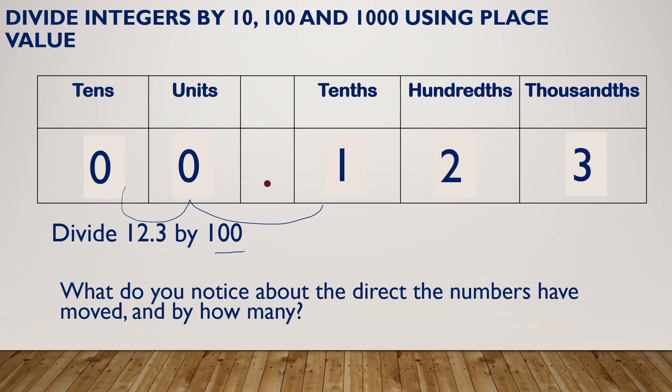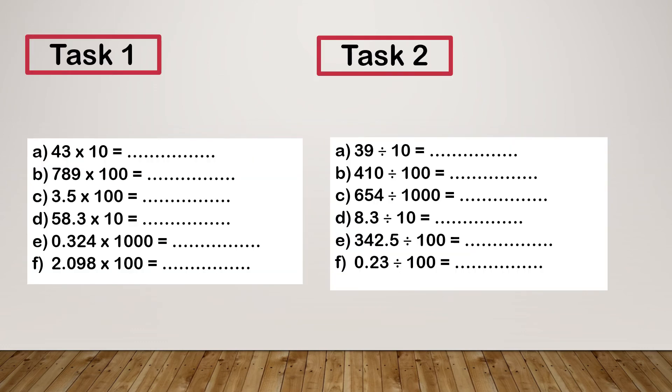So when I'm multiplying, I'm moving everything one space to the right. When I'm multiplying by 10, two spaces to the right for 100, three spaces to the right for 1,000. When I'm dividing, everything's going one space to the left for a 10, two spaces to the left for 100 and three spaces to the right for 1,000.